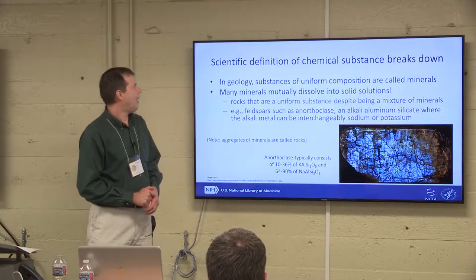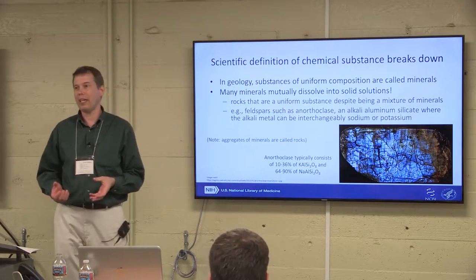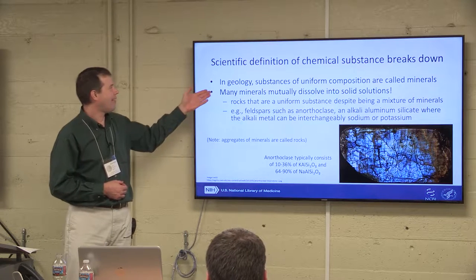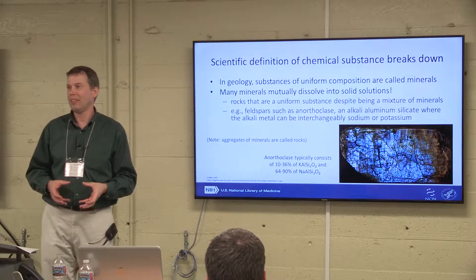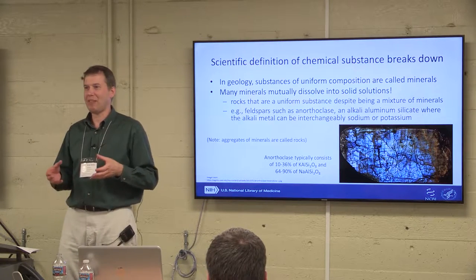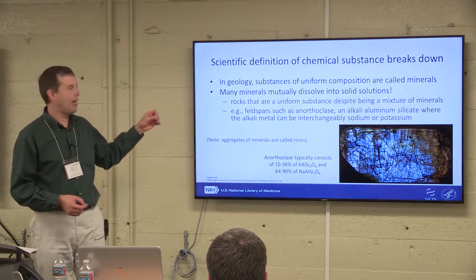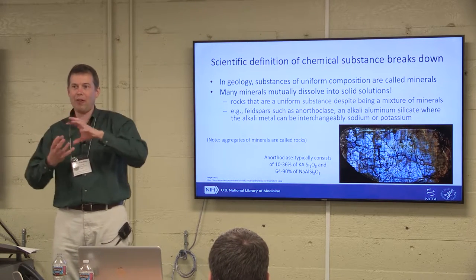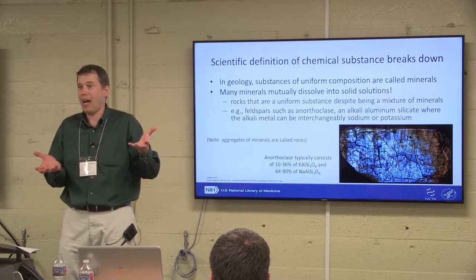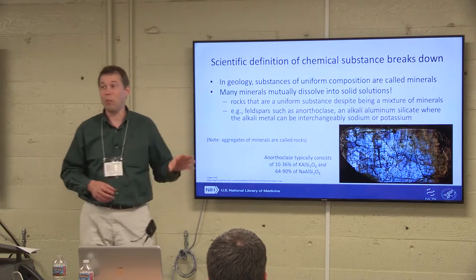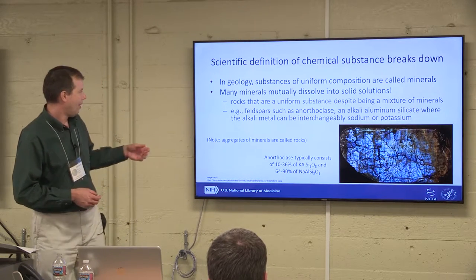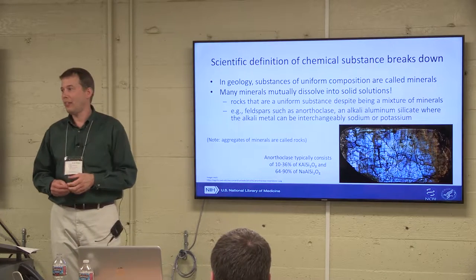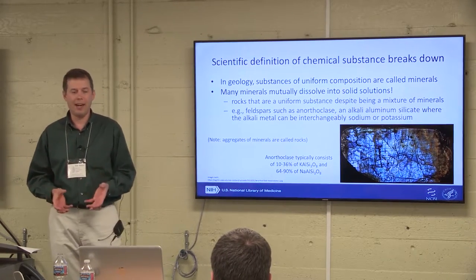In geology, if you have a uniform composition you're called a mineral; if you have multiple minerals together you're called a rock. Interestingly, quite a number of minerals mutually dissolve into solid solutions. Some rocks are made in volcanic environments where two different materials are in solution together, then go solid. You get a beautiful iridescent moonstone that looks like one substance, but it's made of aluminum silicates with a certain percentage of potassium and sodium. You'd think it was just one thing — it's not.